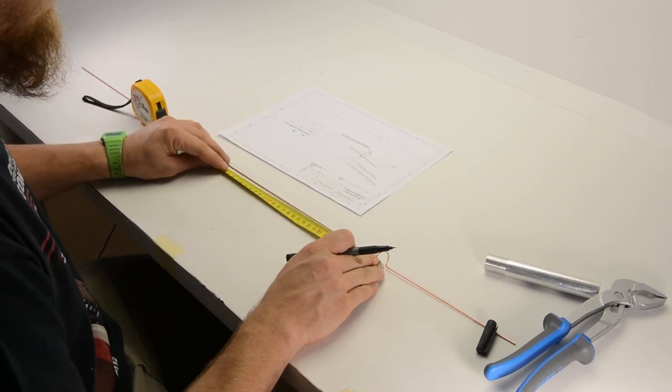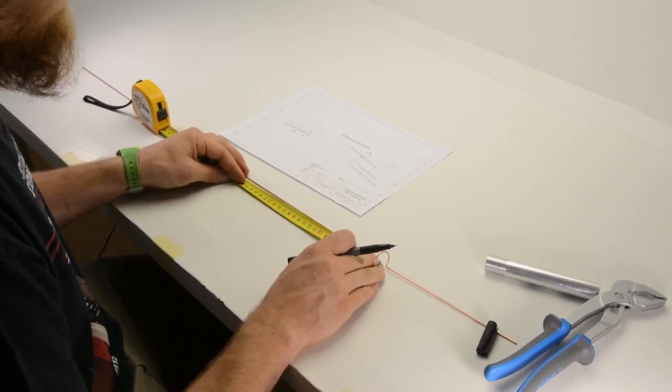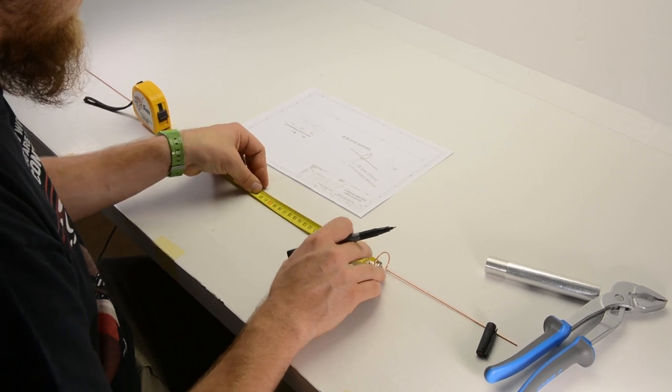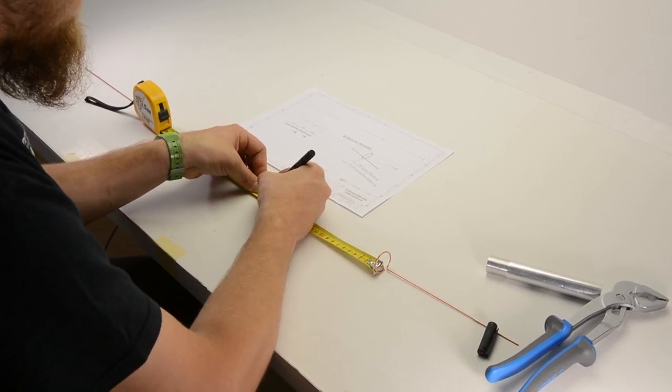So between the two loops there's 221 millimeters, so I'll mark 219 millimeters here.